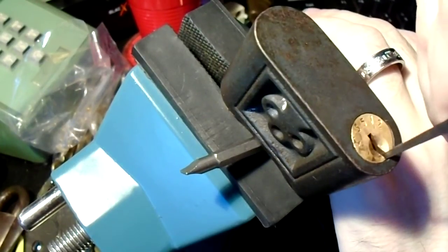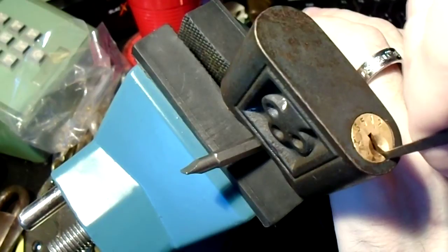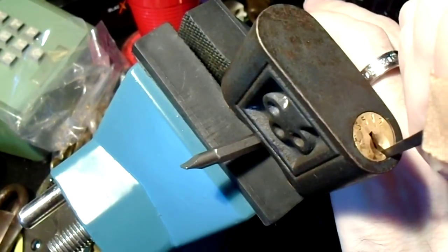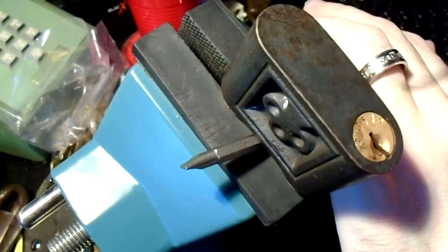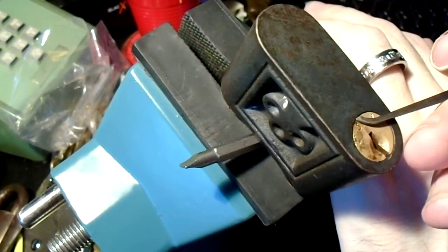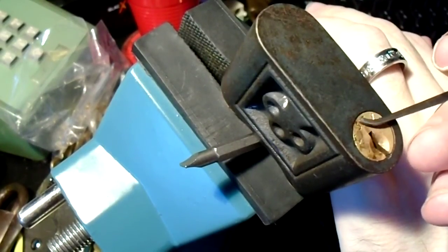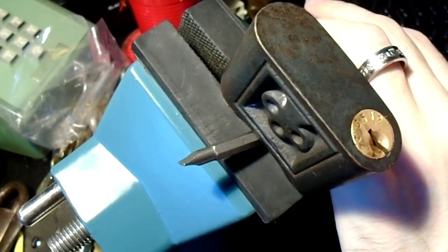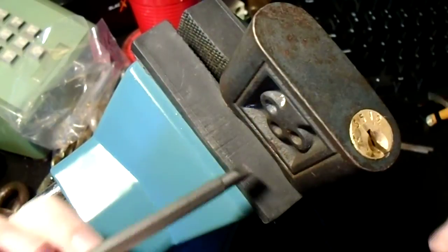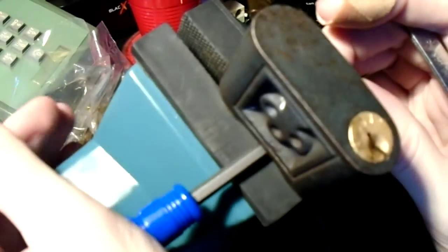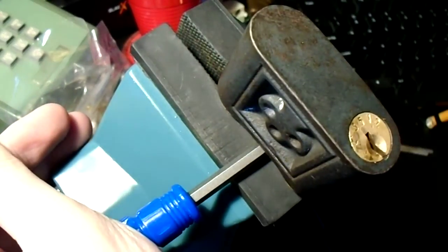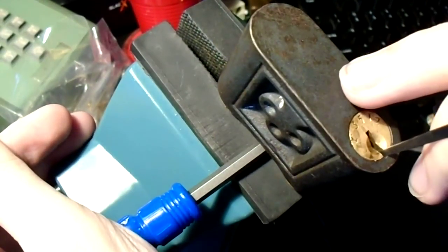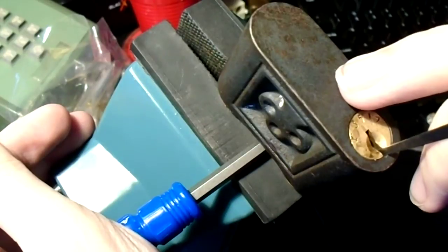So we just reach in there and start feeling around for the first binding pin. Now you want to look for a little bit of separation between the body and the core. If they're perfectly flat, you're not getting real tension on there. But if you lift it and you get that little gap going, then you're okay, and you should start to get binding pins.